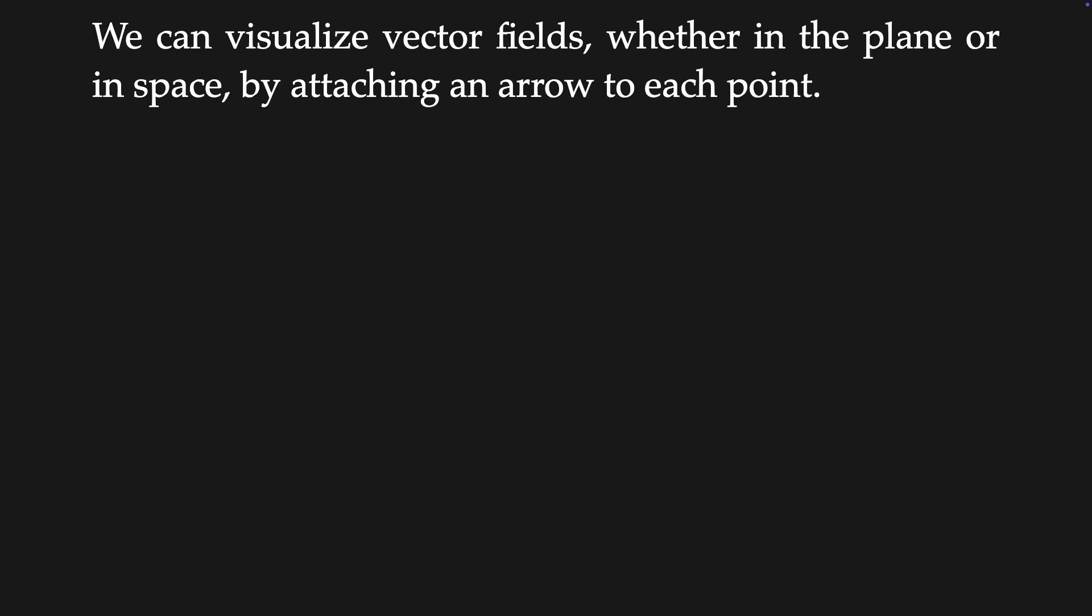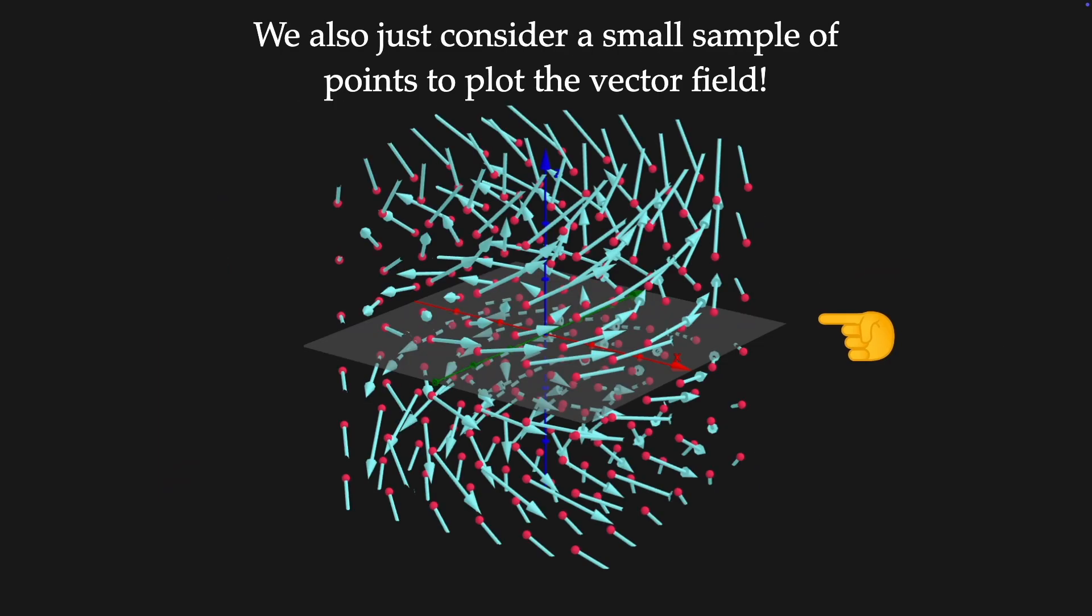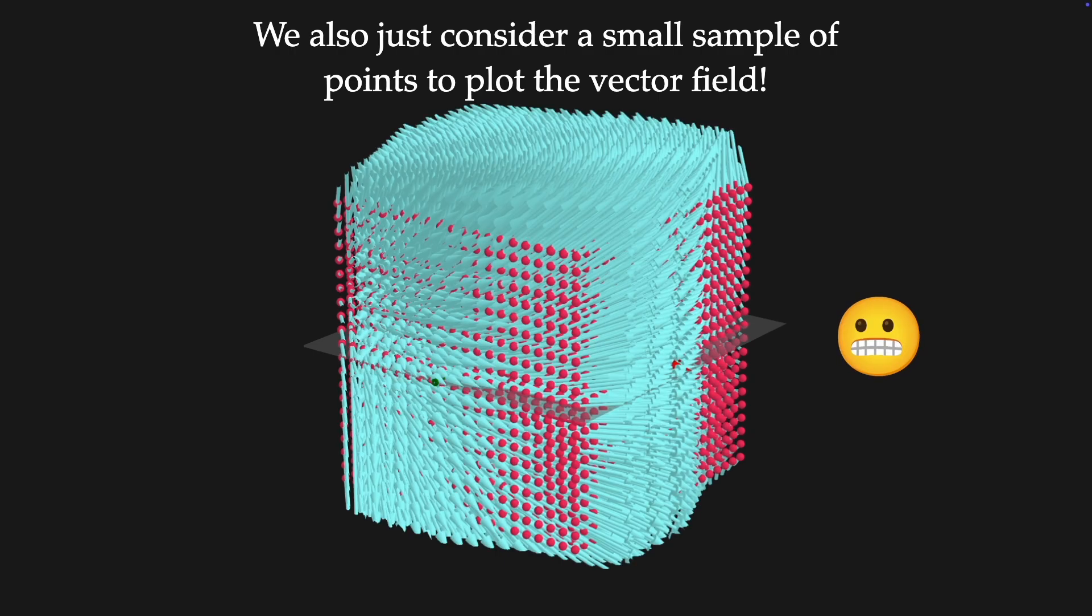We can easily visualize vector fields, whether in a plane or in a space, by attaching an arrow to each point. When we plot vector fields, we only consider a small sample of points, otherwise we will obtain a picture where too many vectors will overlap, making the structure of the field unclear.